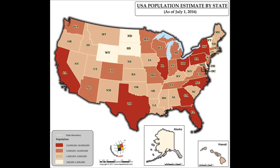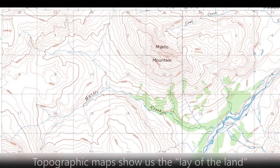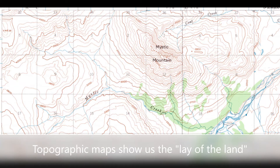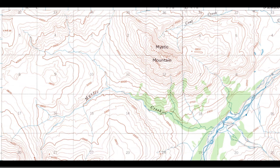Topographic maps show us the lay of the land. By looking at a topographic map you can tell if an area has steep slopes or is generally flat. You can determine the direction rivers are flowing, or the location of many natural and man-made features.